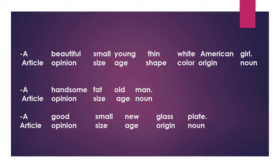The second sentence: A for article, handsome for opinion, fat for size, old for age, men for noun. The third sentence: A for article, good for opinion, small for size, new for age, glass for material, blade for noun.